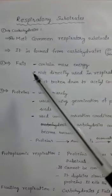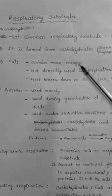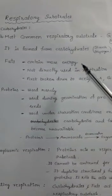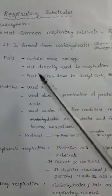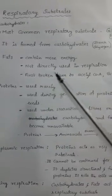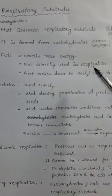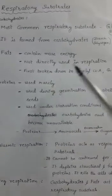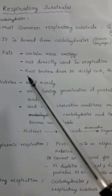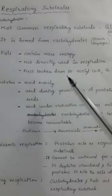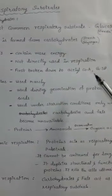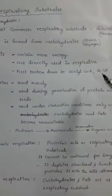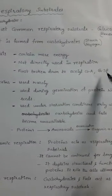Next, fats. Fats contain more energy as compared to carbohydrates. These are not directly used in respiration. Fats are first broken down to acetyl-coenzyme A and glyceraldehyde-3-phosphate.